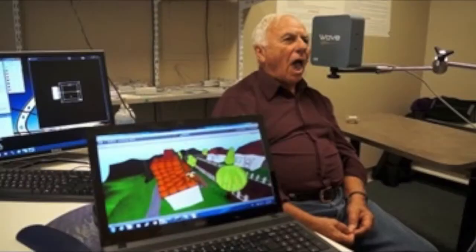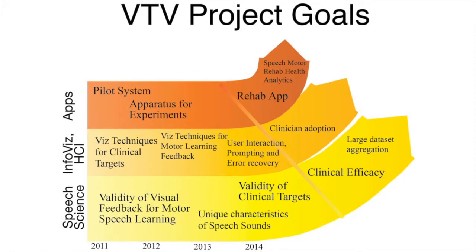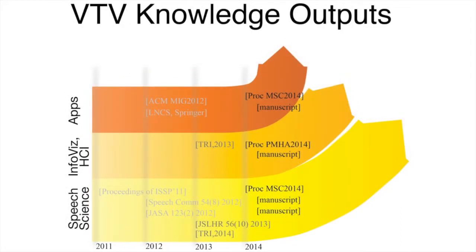One of my research projects is concerned with helping those who have been negatively affected in terms of their ability to speak — for instance, following stroke or in the face of neurodegenerative disease like Parkinson's disease. It's known in general that for motor rehabilitation, visual feedback is very important. So, in terms of rehabilitating speech, visual feedback in the form of data that concerns one's motor speech or acoustical properties of speech is known to be important, and this is the area that we're hoping to innovate and to devise new visualization techniques.